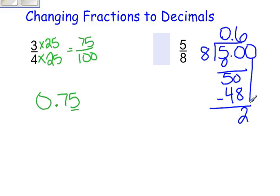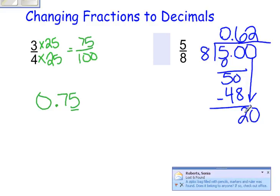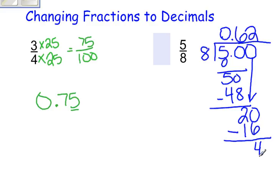Add another 0 and bring it down. 8 goes into 20, 2 times. 8 times 2 is 16. 20 minus 16 is 4.